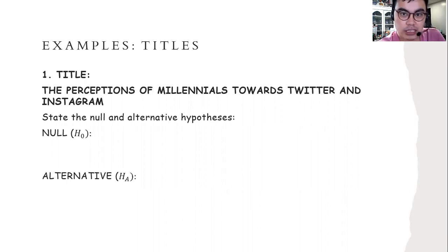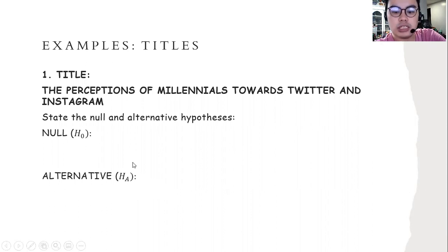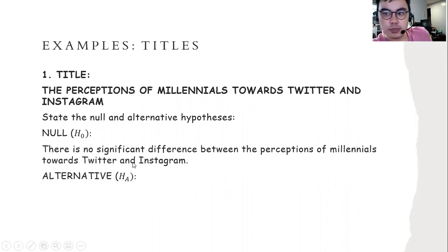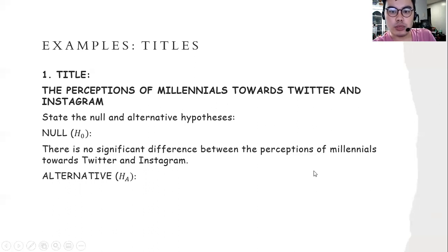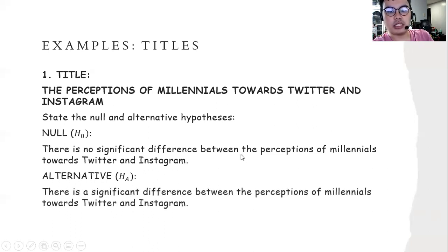The first title is the perceptions of millennials towards Twitter and Instagram. The symbol for null is H0, and for the alternative, it is Ha. The null hypothesis states: there is no significant difference between the perceptions of millennials towards Twitter and Instagram. The alternative hypothesis states: there is a significant difference between the perceptions of millennials towards Twitter and Instagram.